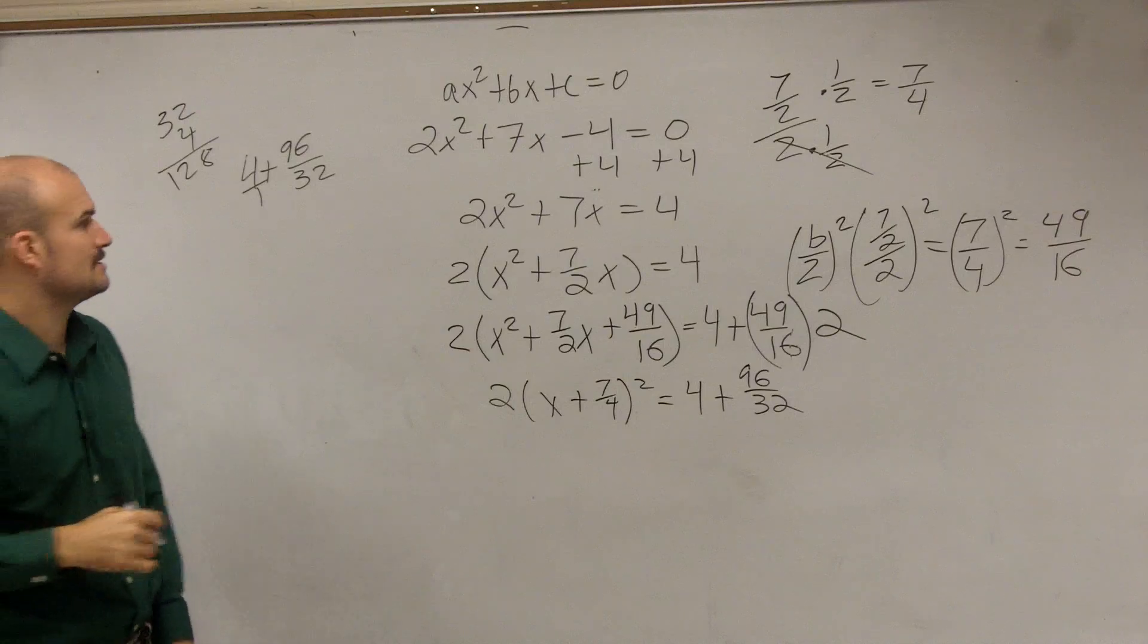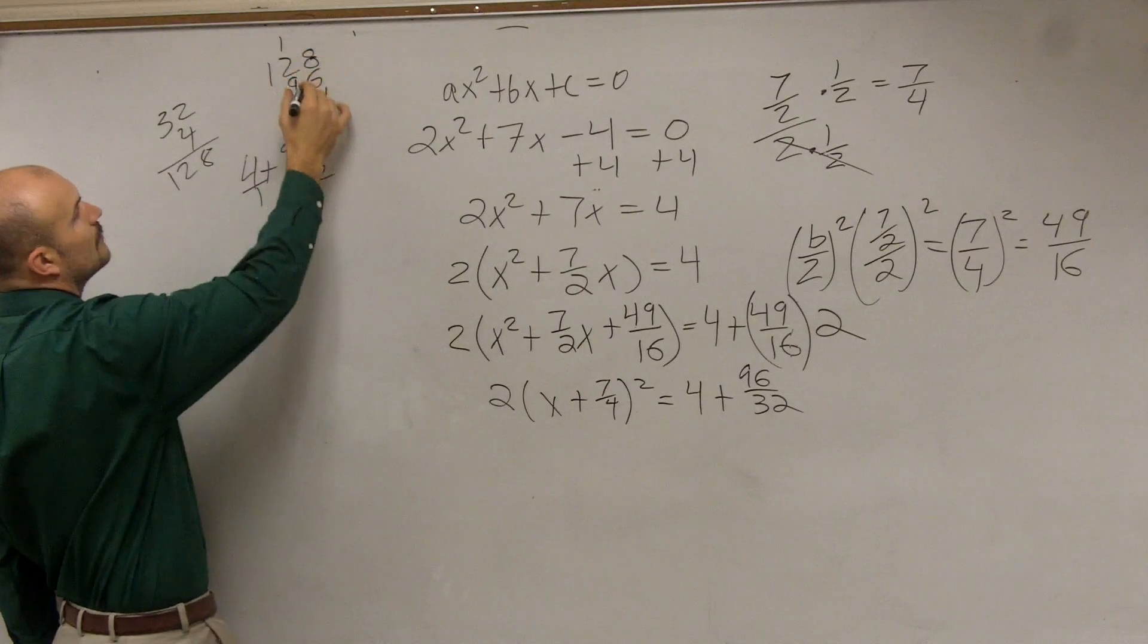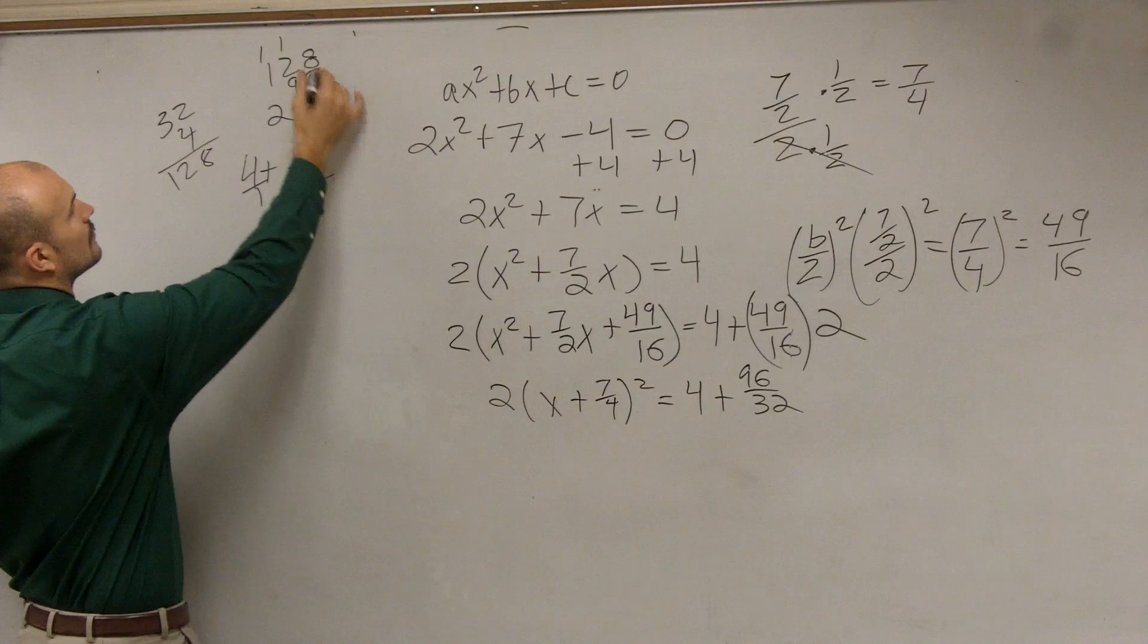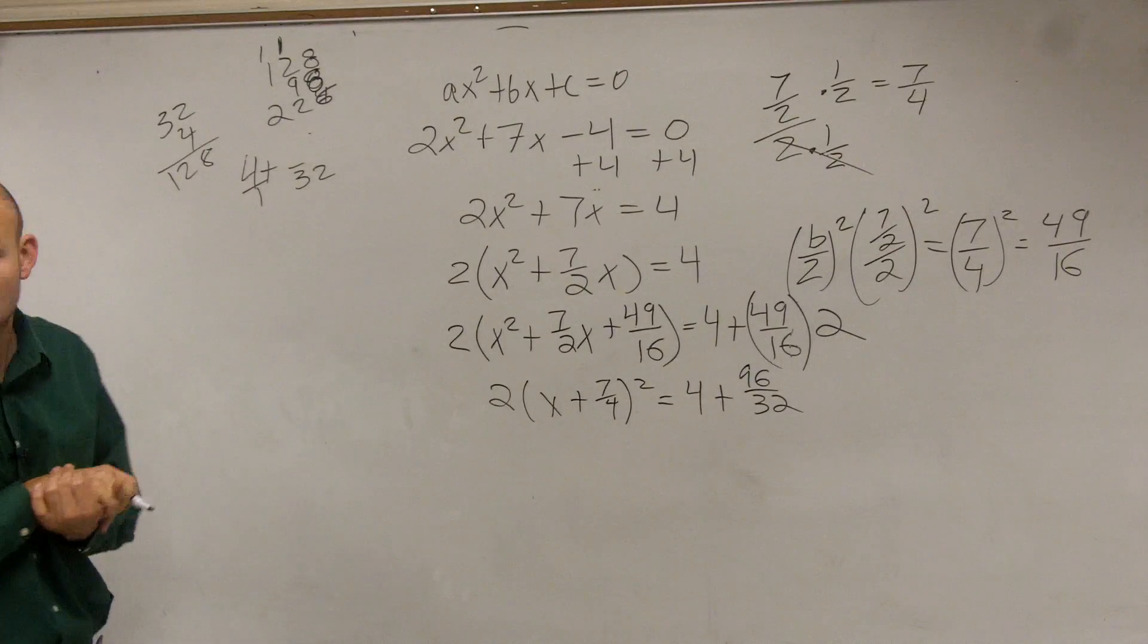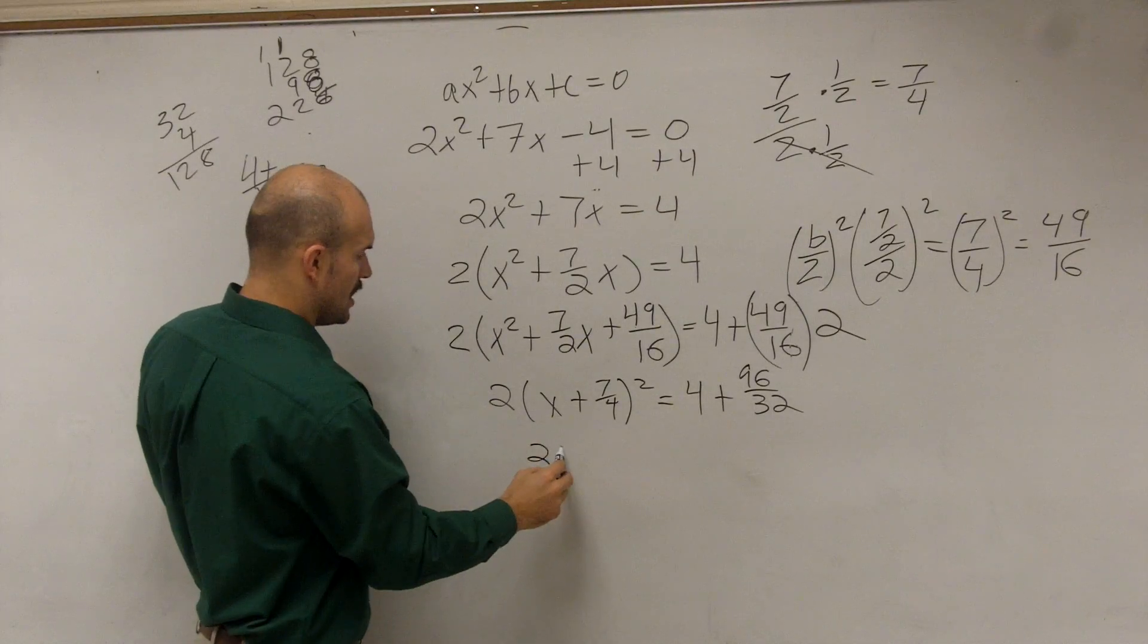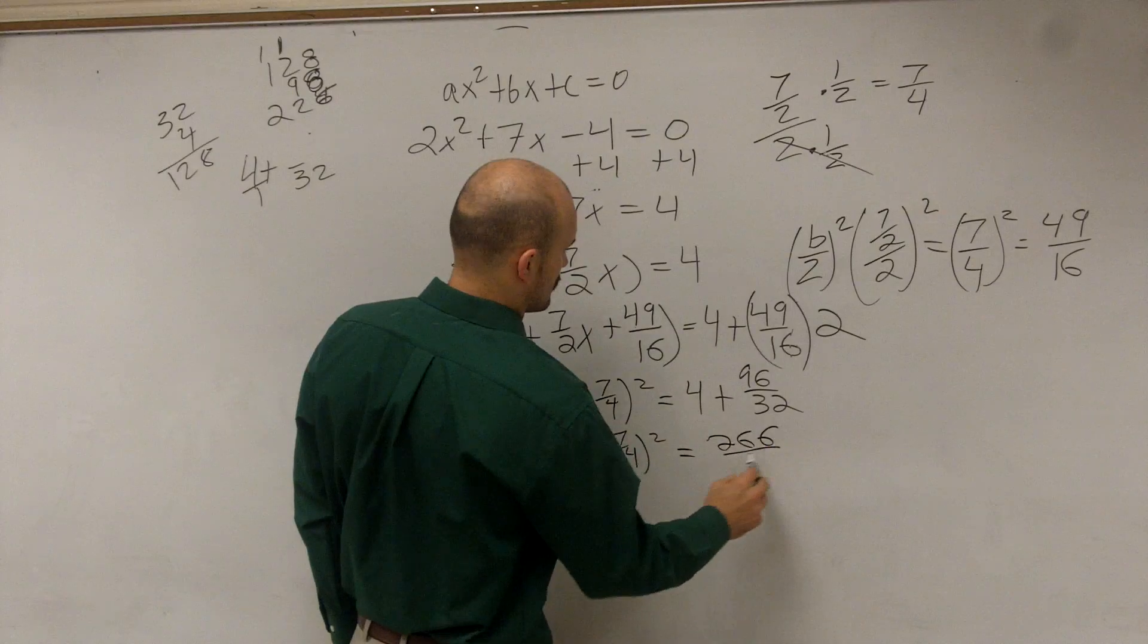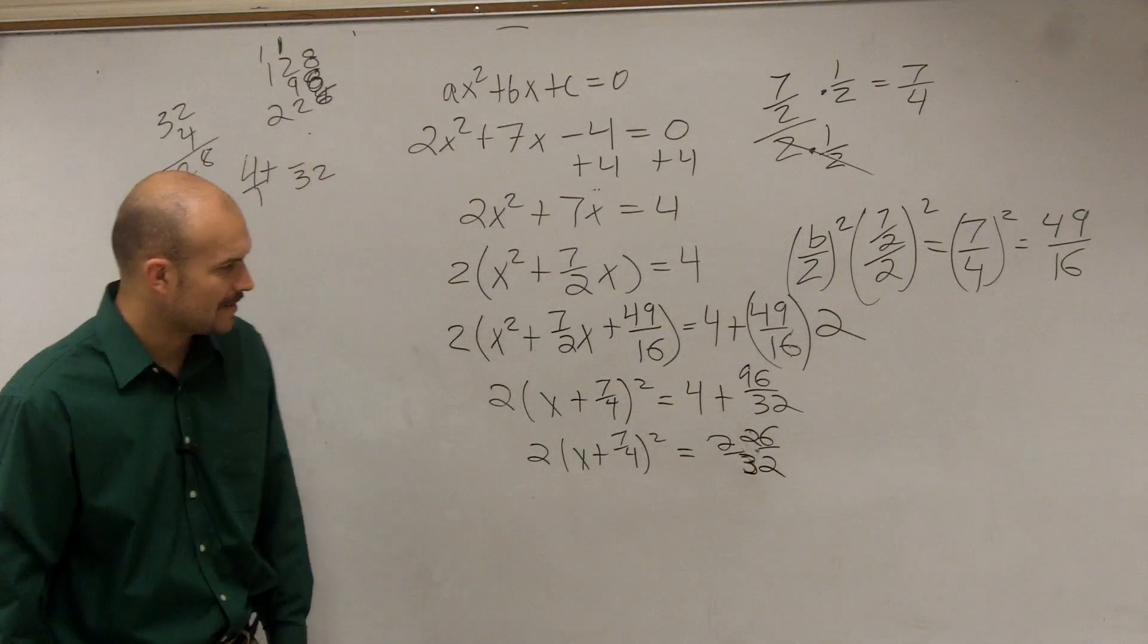So we're going to have 128 plus 98. It's 98. You're right. Thank you. Now it's a lot simpler. So I have 226, right? Over 32. OK. So I have 2 times x plus 7 over 4 squared equals 226 divided by 32. Right?